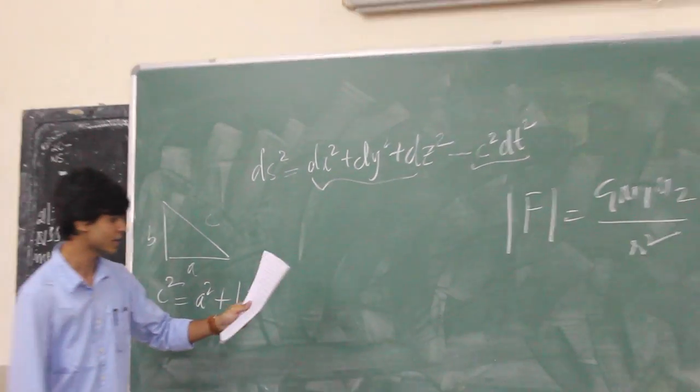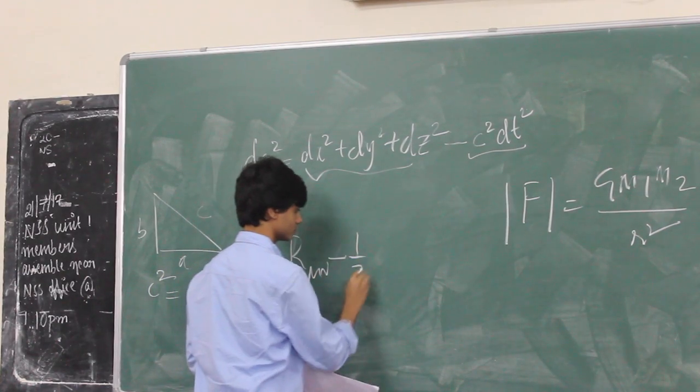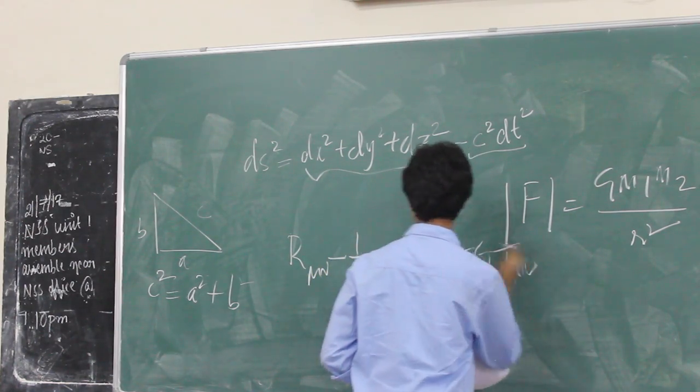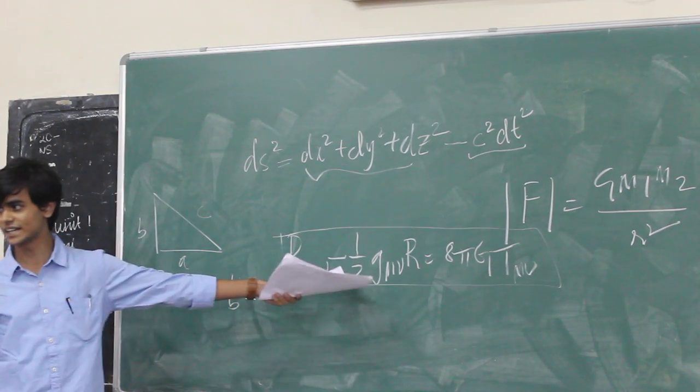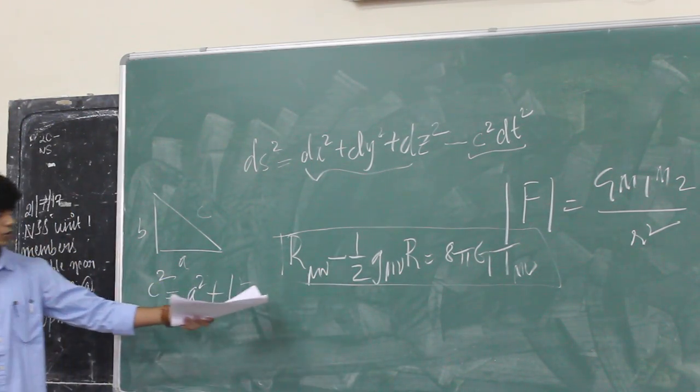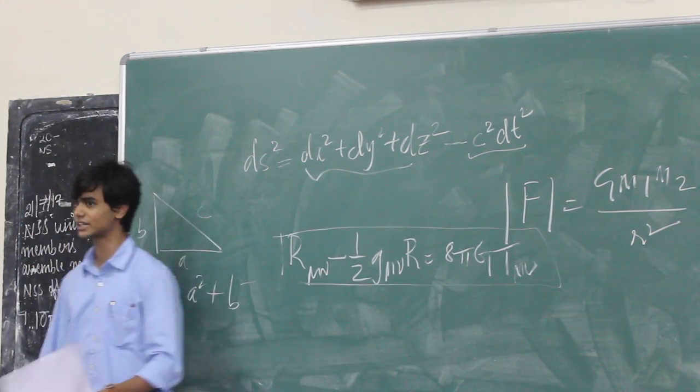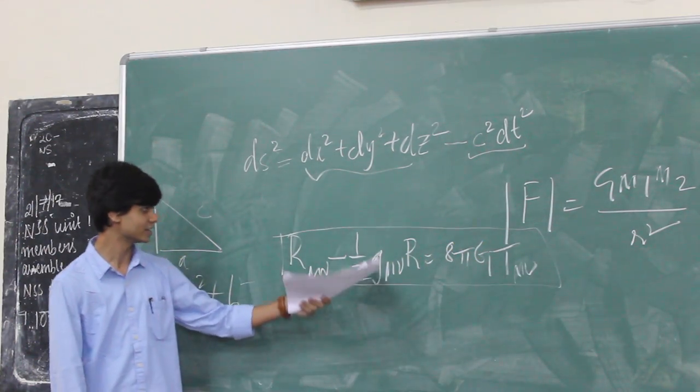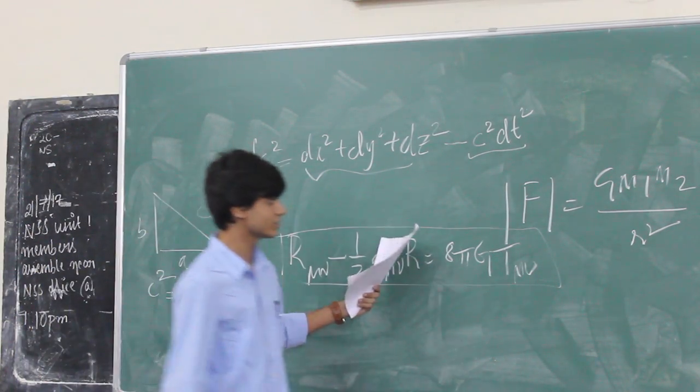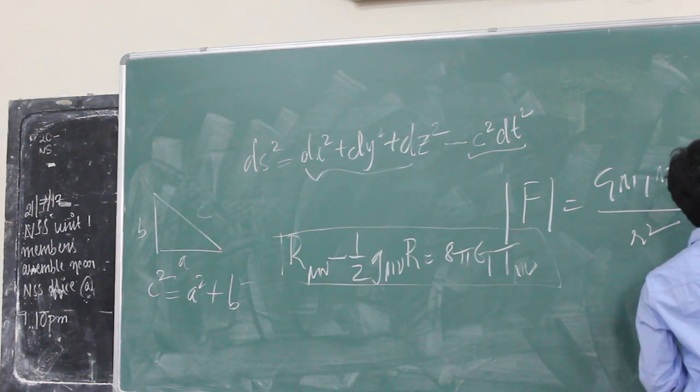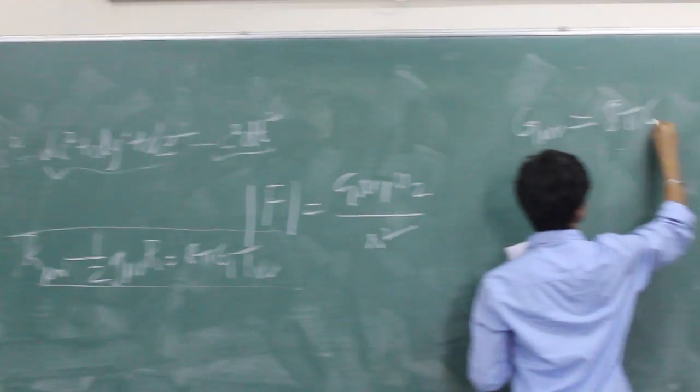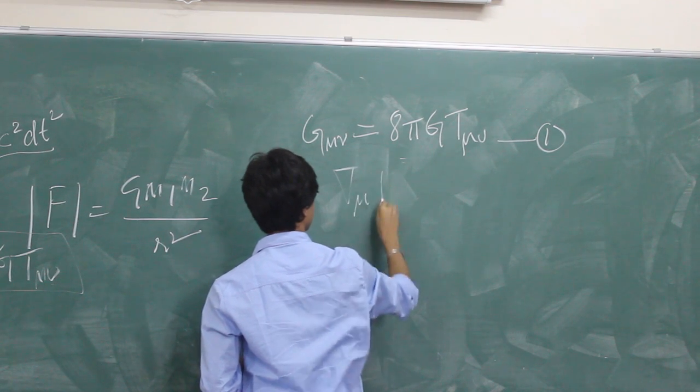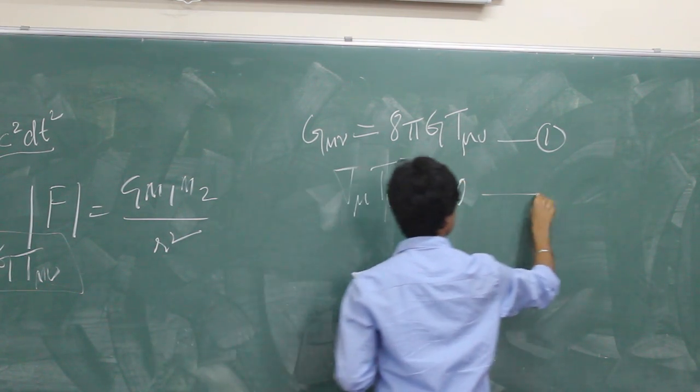So Einstein developed this mathematics and he gave out this famous equation. This is famously known as the Einstein's field equation. Why is it called the field equation? It's because it gives out a theory of gravity itself. Until 200 years, until Einstein's time, this was the theory of gravity we all believe. But Einstein came in and then he said this is the new theory of gravity. This equation, I'll rewrite it in two different forms.